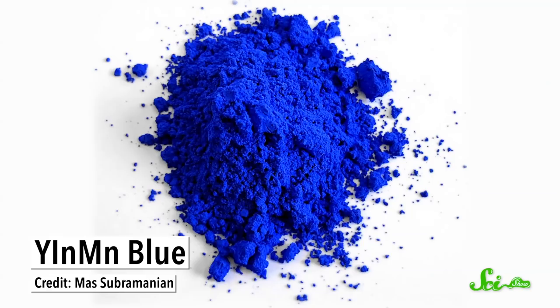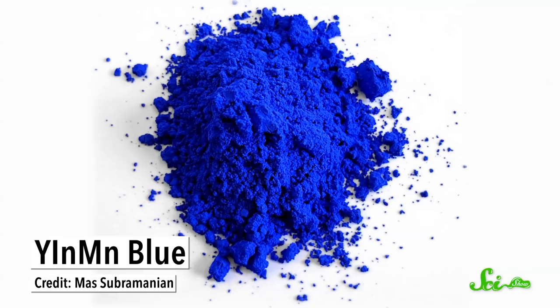It was a bright blue, and because it was made at such high temperatures, the scientists knew it had to be a pretty stable chemical. Along with oxygen, the pigment was made of just three elements—yttrium, indium, and manganese. So it was named YInMn blue.